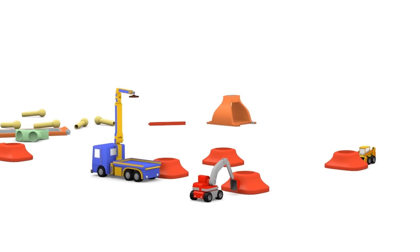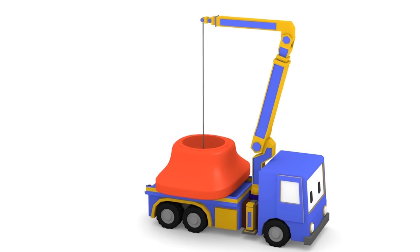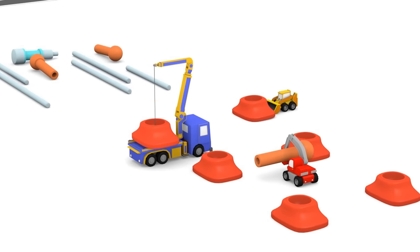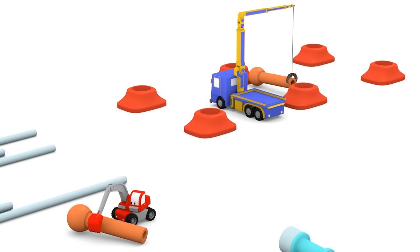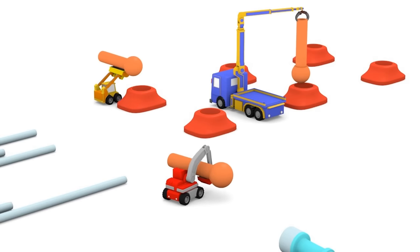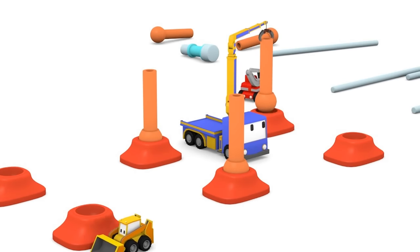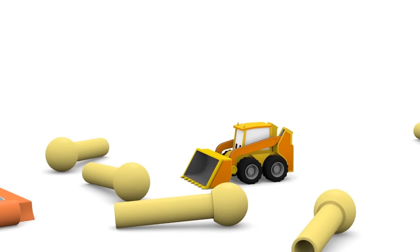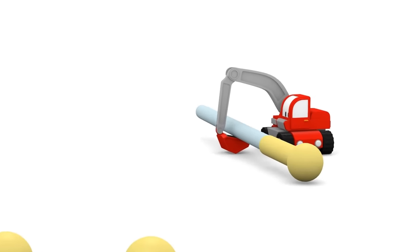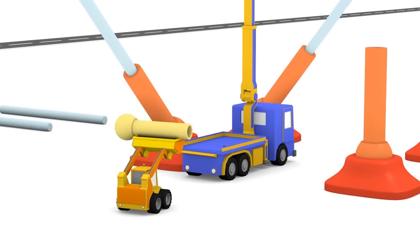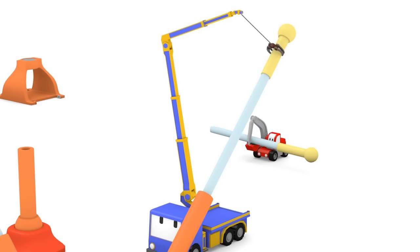These big red pieces will be the base. And these orange parts will be the legs. We can connect these extensions to the yellow pieces to make the swing stand really tall. Great job!